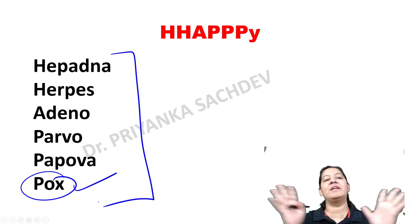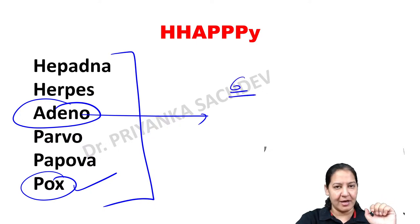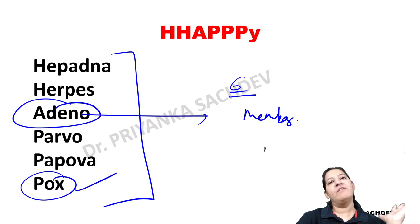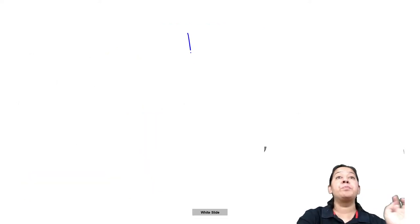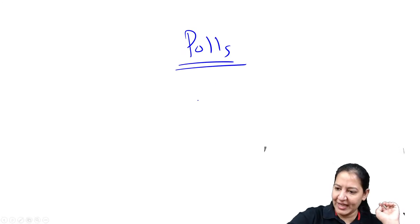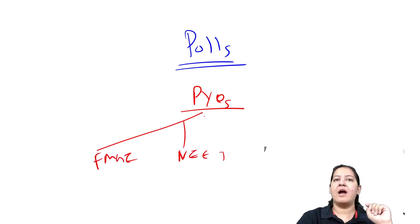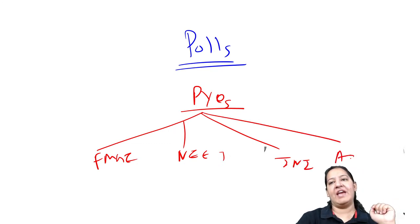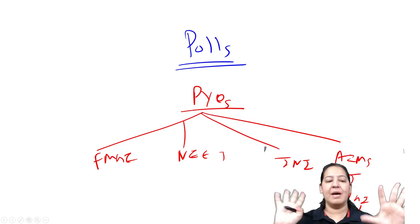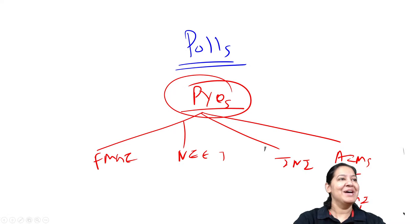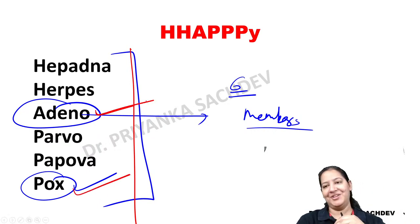Pox virus is now completed. The next virus is adenovirus. We will complete all six DNA virus families one by one using the same headings and MCQ format. The poll questions are all previous year questions from various exams including FMGE, NEET-PG, AIIMS, PGI, NIMHANS, and INICET. However, the session link is expiring, so we will continue the lecture on the Unacademy Learners App.